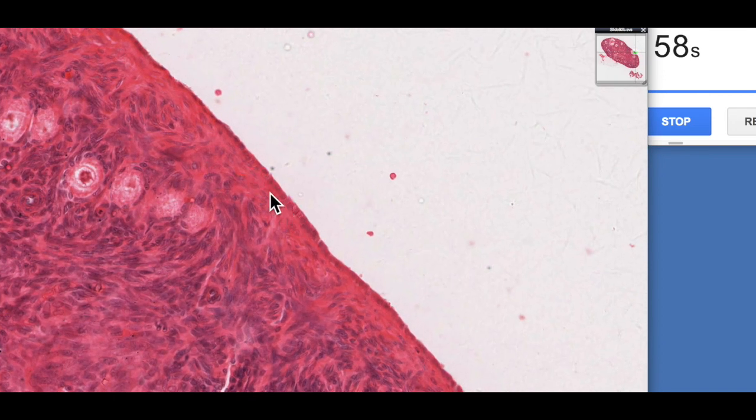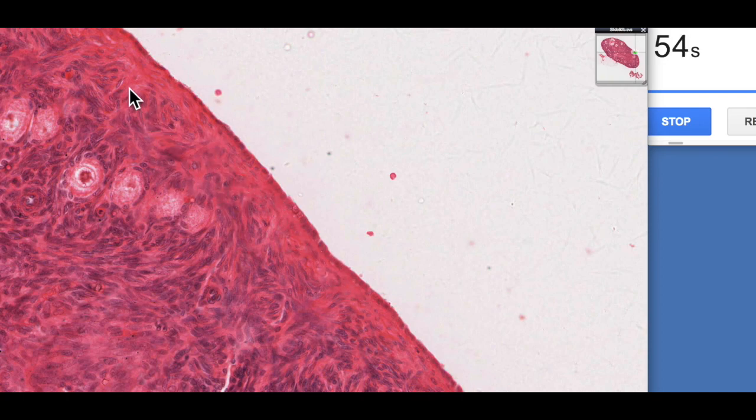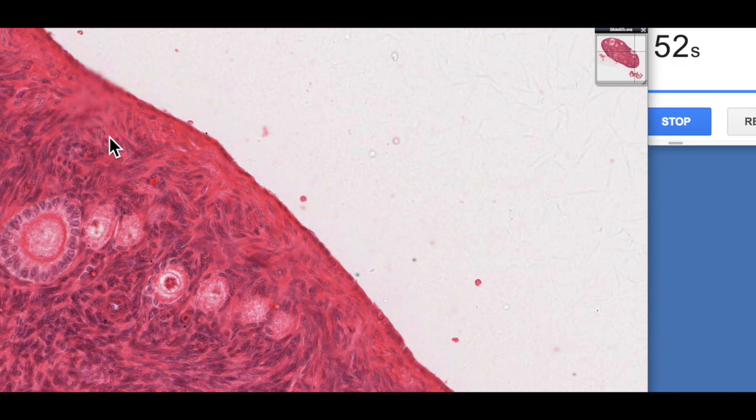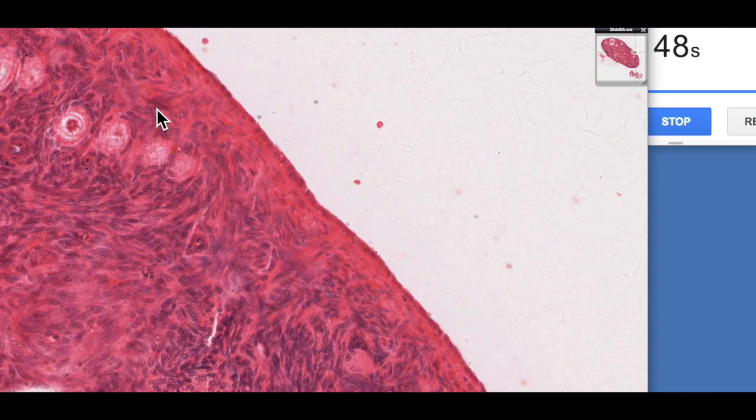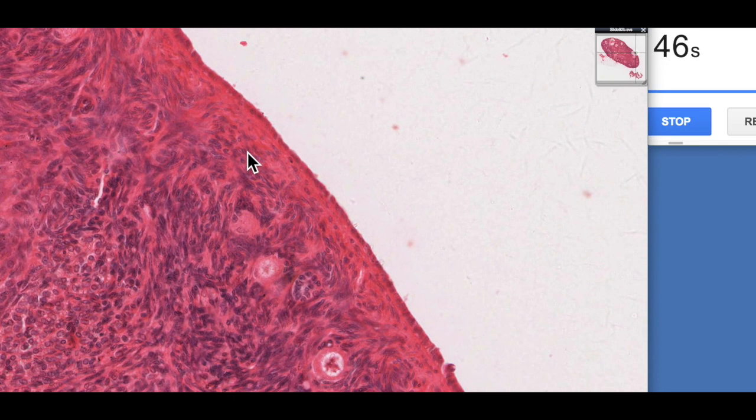There would be a basement membrane sitting beneath there, and then we've got a dense irregular connective tissue layer here, which is referred to as the tunica albuginea. This is a term which you may have come across if you've looked at the histology of the testis. The testis has a tunica albuginea. It just means a white layer because of its dense connective tissue.